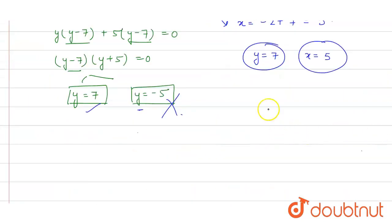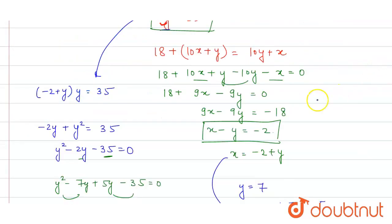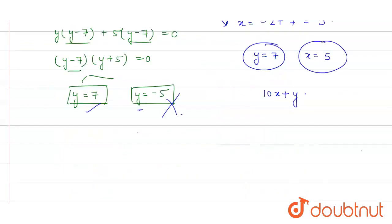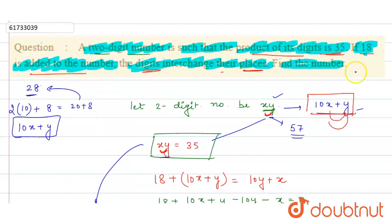So y is 7 and x is equal to 5. The number is what we have to find, 10x plus y. So 10 times 5 is 50 plus 7, that is equal to 57. So clearly what is our number here, the number is 57. This is our answer. Thank you.